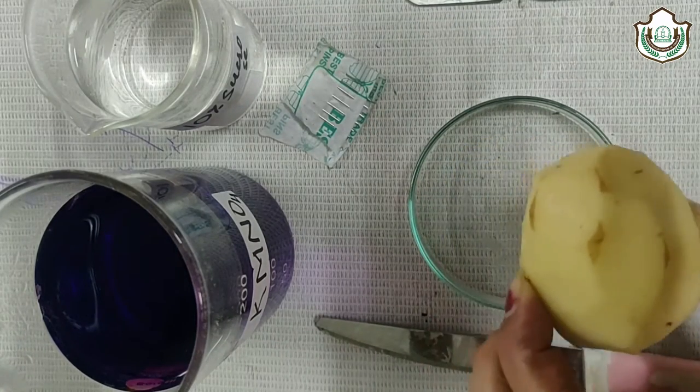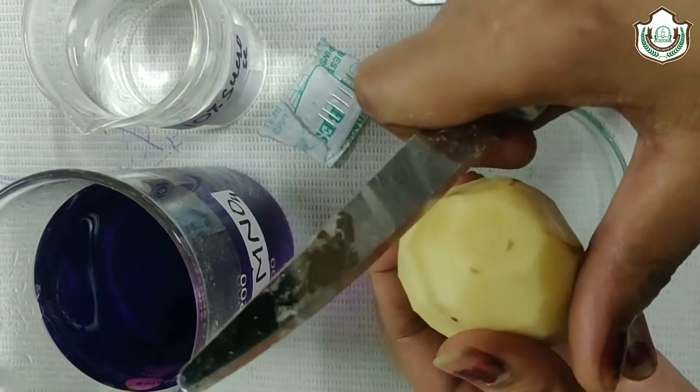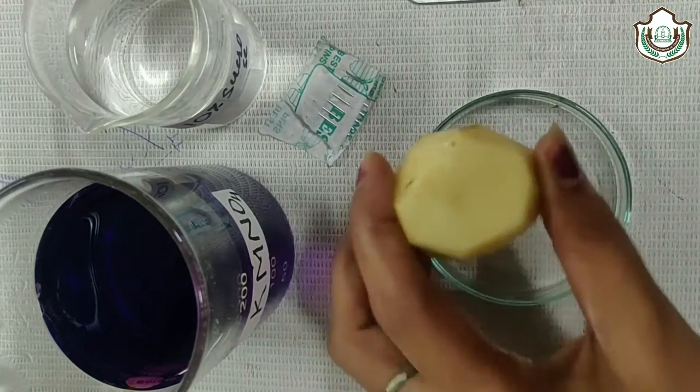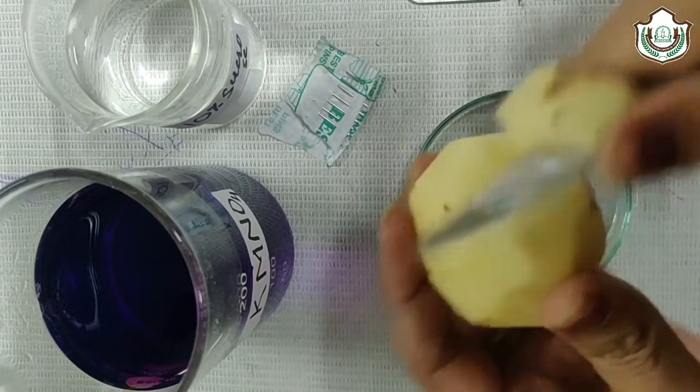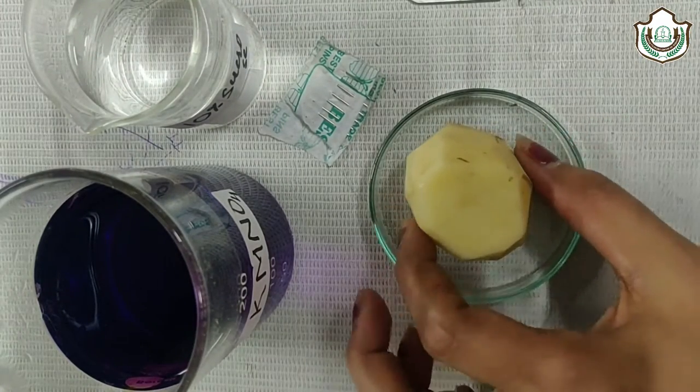Now first of all, we have to cut the base of potato like this, from both up and down side, and place it in a petri dish.